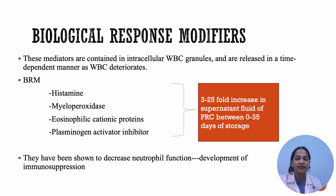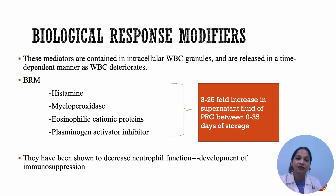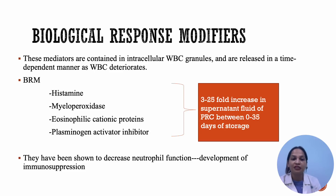The next mechanism is through biological response modifiers. These mediators are contained in intracellular WBC granules and are released in a time-dependent manner as the WBC deteriorates during storage. The biological response modifiers are histamine, myeloperoxidase, eosinophilic cationic proteins, and plasminogen activator inhibitor. Their amount increases 3 to 25 times in the supernatant fluid of red cells between 0 to 35 days of storage. These modifiers decrease neutrophil's normal function, leading to the development of immunosuppression.